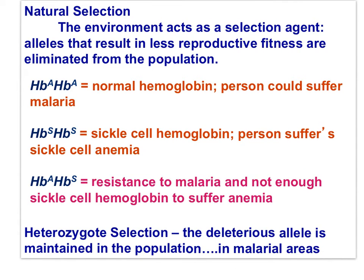The sickle cell story is interesting from the perspective of natural selection. In regions with malaria, both HBA-HBA and HBS-HBS genotypes suffer. Those with normal hemoglobin suffer from malaria, as the malarial parasite reproduces within red blood cells. Those homozygous for sickle cell suffer from sickle cell anemia and may not live a full life. But those who are heterozygous do not experience sickle cell anemia and have some resistance to malaria. Thus, both alleles are maintained in the population through heterozygous selection.